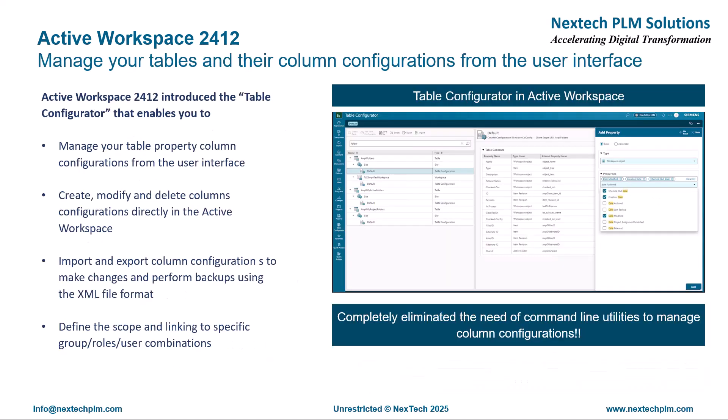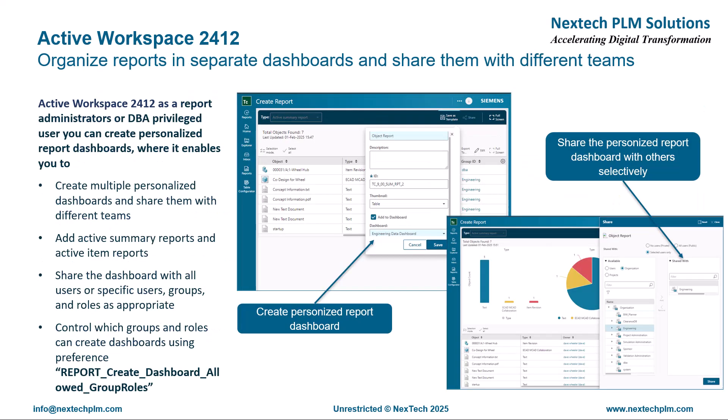With Active Workspace 2412, you can now manage your tables and their column configurations from the user interface, saving a lot of effort and time. This completely eliminates the need of command line utilities to manage column configurations and simplifies column management. With this functionality, you can create, modify, and delete column configurations directly in Active Workspace. This also enables you to import and export column configurations to make changes and perform backups using the XML file format.